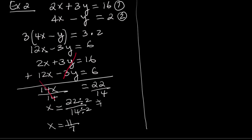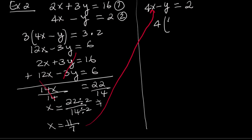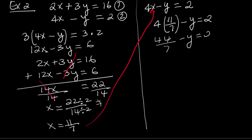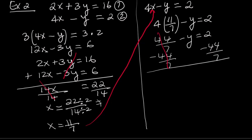Now let's plug that value of x into the second equation to solve for y. The second equation is 4x minus y equals 2. Substitute 11 over 7 for x: 4 times 11 over 7 minus y equals 2. 4 times 11 is 44, so we have 44 over 7 minus y equals 2. 44 over 7 and negative 44 over 7 cancel out, leaving negative y equals 2 minus 44 over 7.